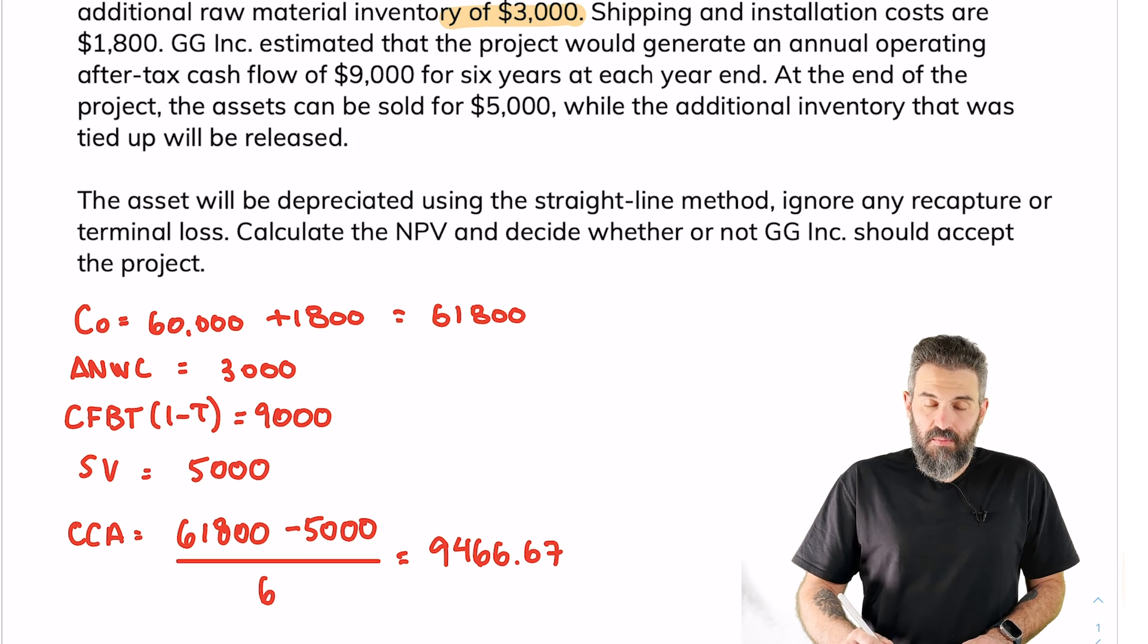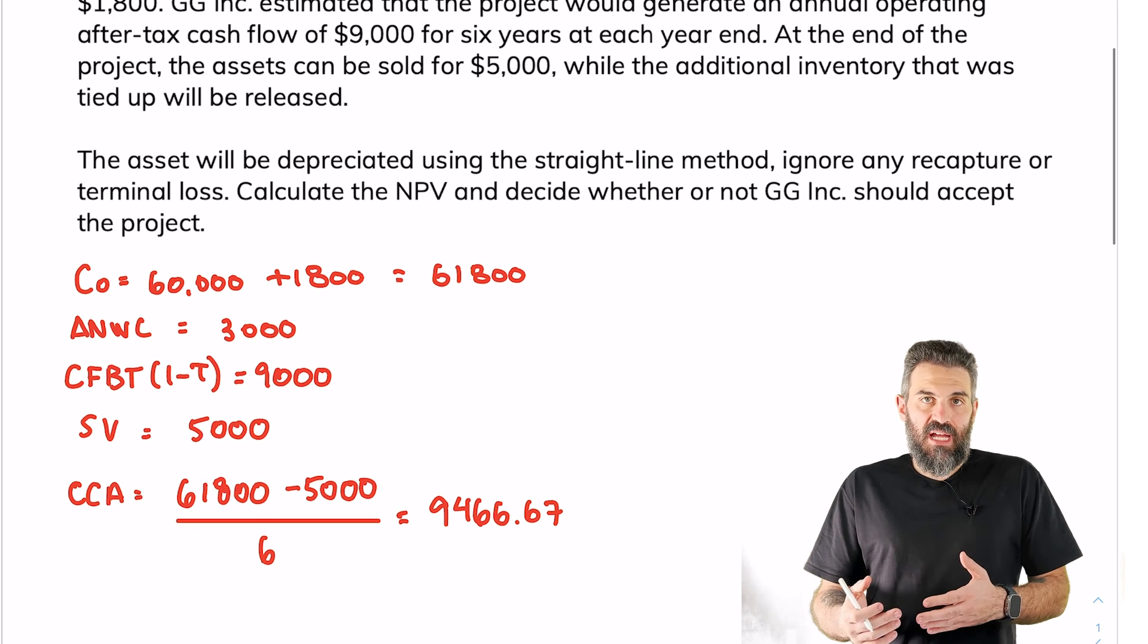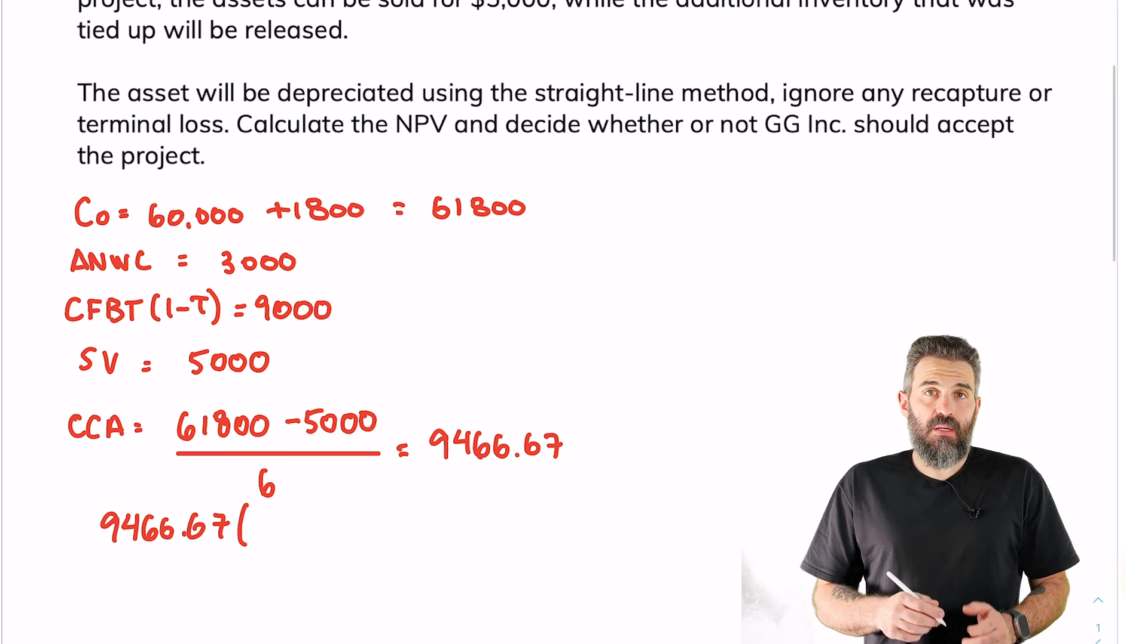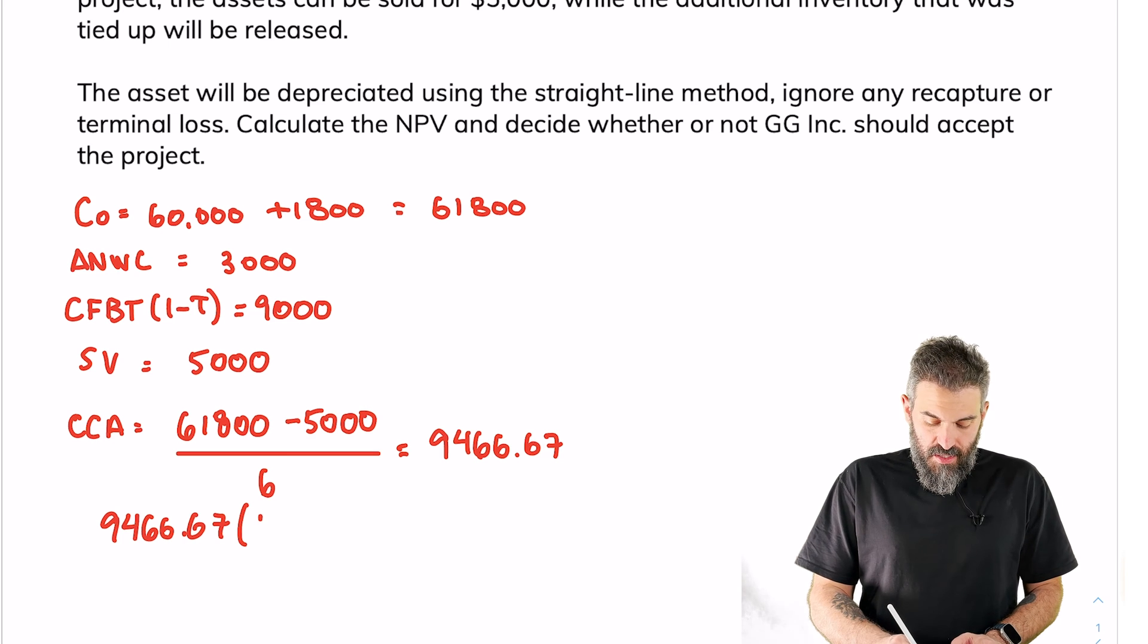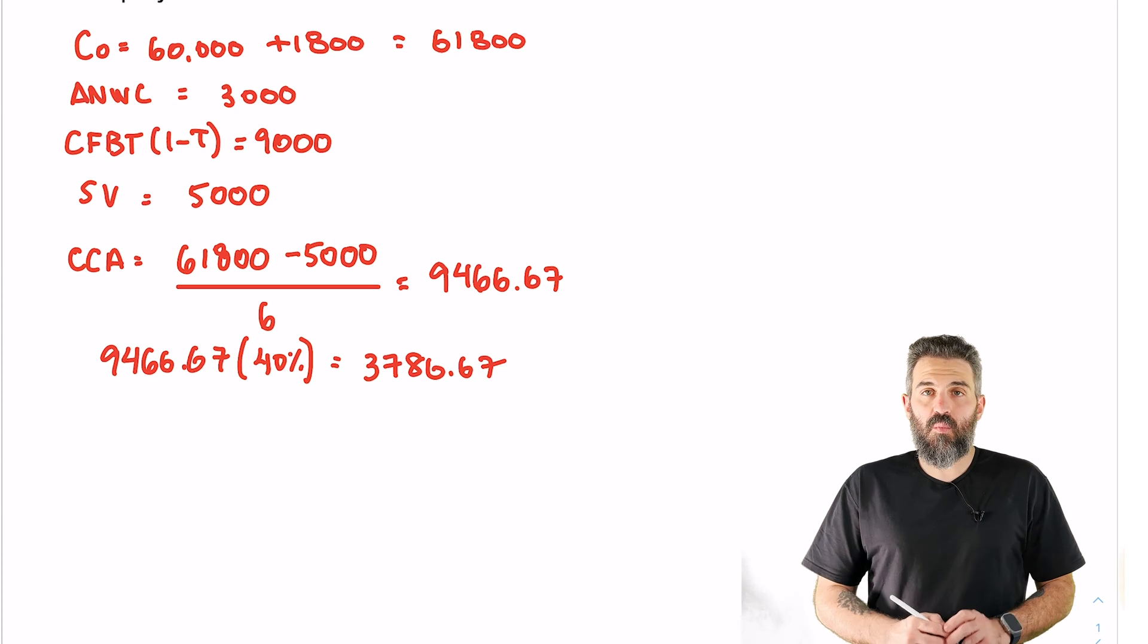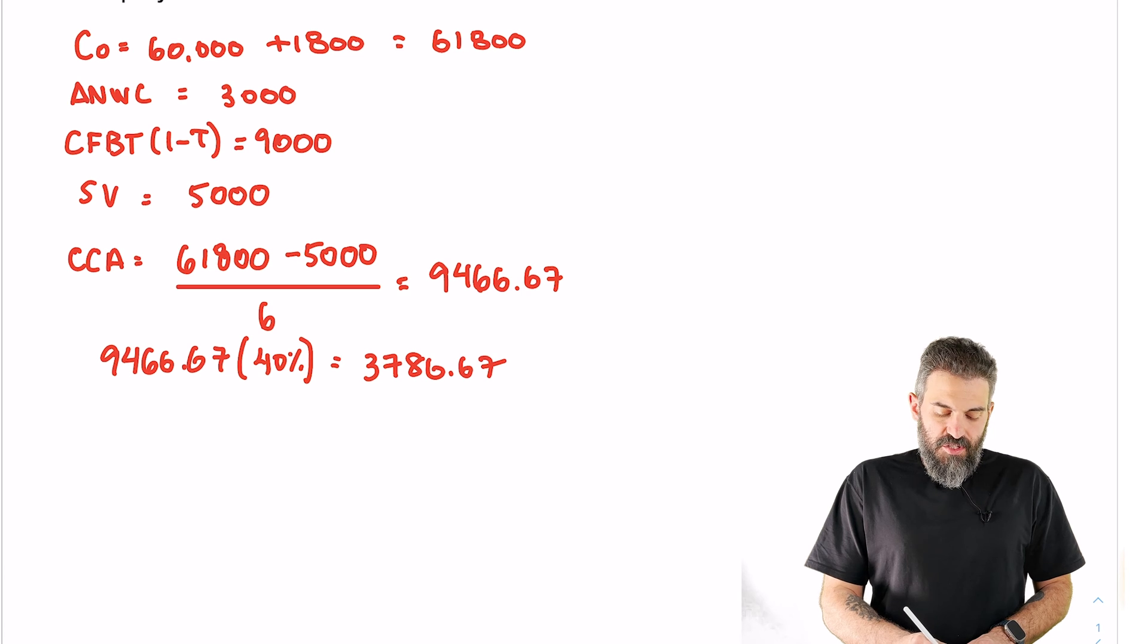Which we'll now multiply by tax to get the tax shield. So multiply $9,466.67 by the tax rate of 40%. So the annual cash flow is $3,786.67.